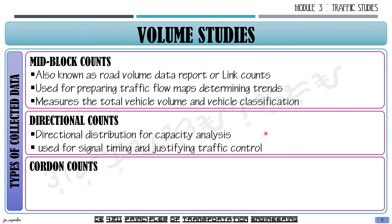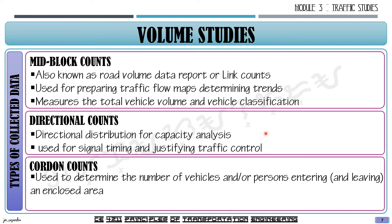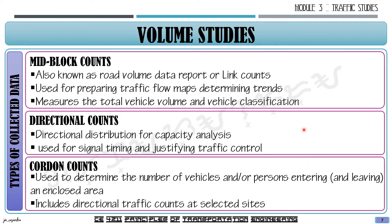The next type is cordon counts, used to determine the number of vehicles or persons entering and leaving an enclosed area. You identify the area you want to count — not just a single line but a bounded zone — and this includes directional traffic counts at selected sites within that area. Directional counts and intersection counts can be incorporated into cordon counts.